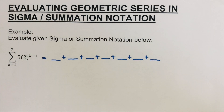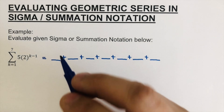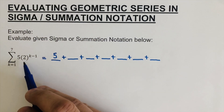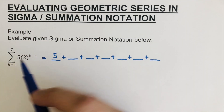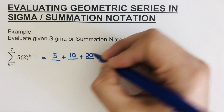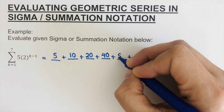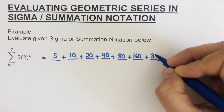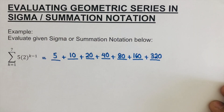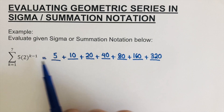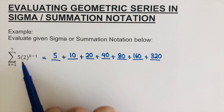Next I'm going to put numbers in here. I'm going to start with five — that's the first term. Since the multiplier is two, we go 10, then 10 times two is 20, 20 times two is 40, then 80, 160, 320. I got these numbers by multiplying by two — that's the R, the multiplier.